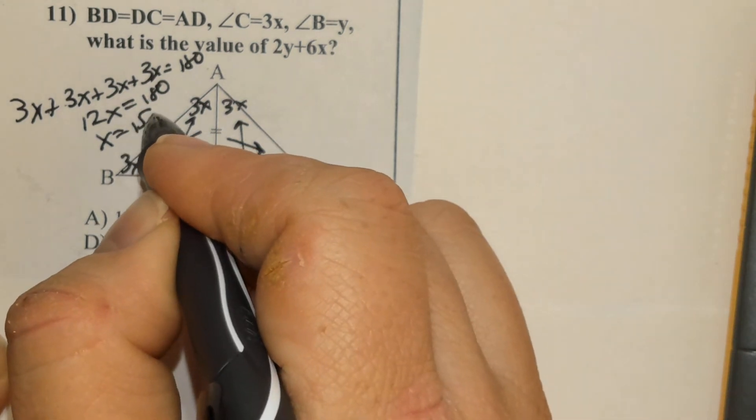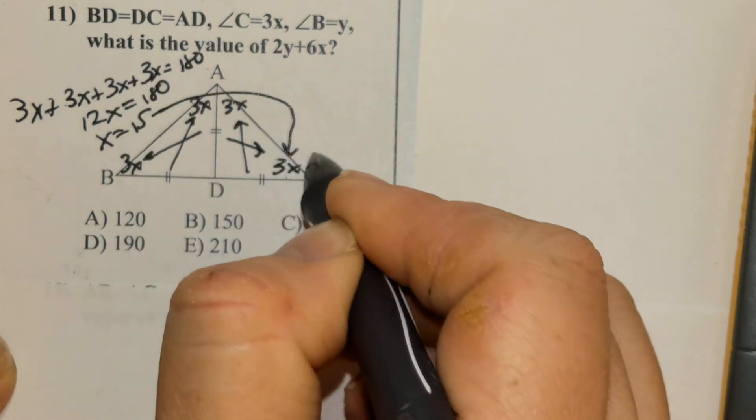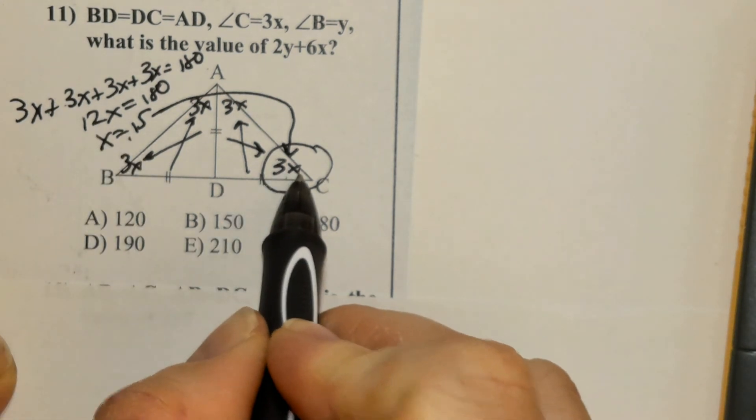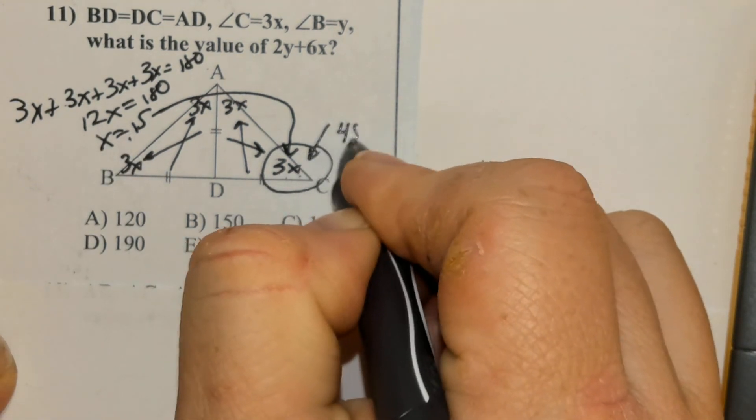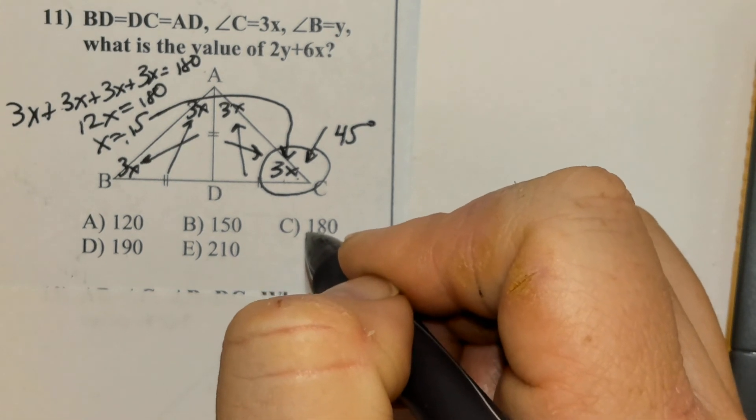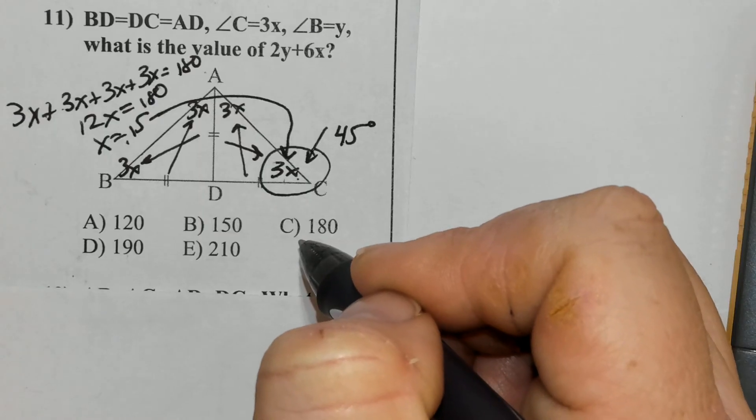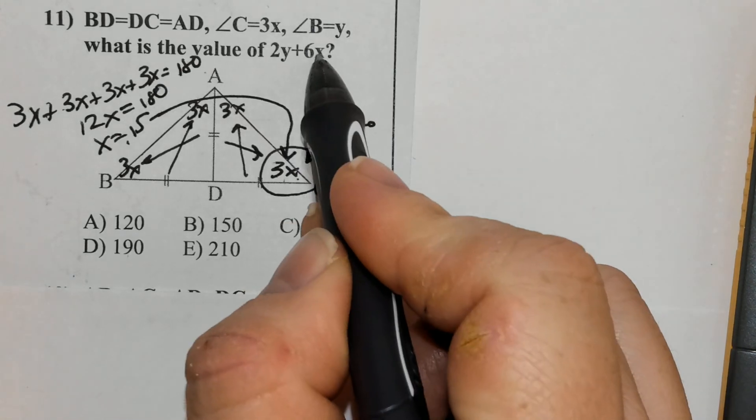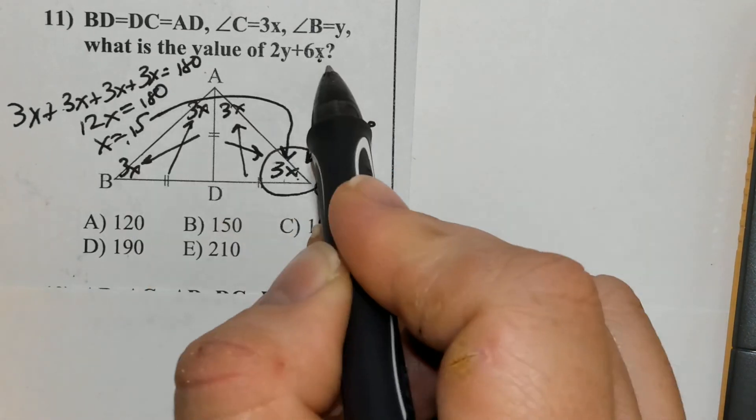That tells us that this angle here, 15 times 3 is 45 degrees. How does that help us? Well, if I look up above, it says x. So I know x is 15. I solved that.